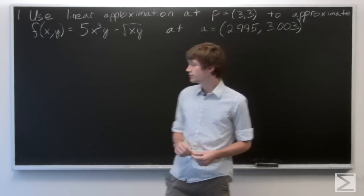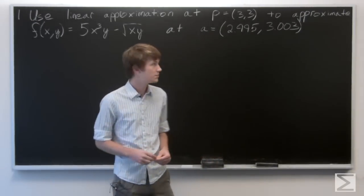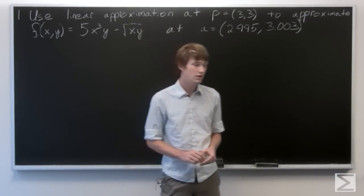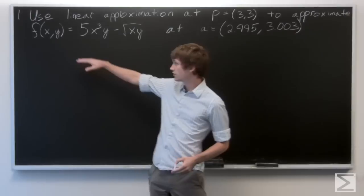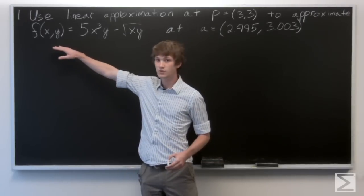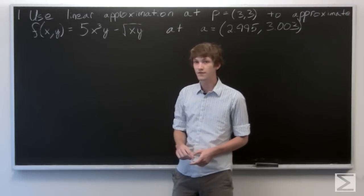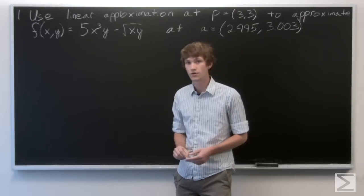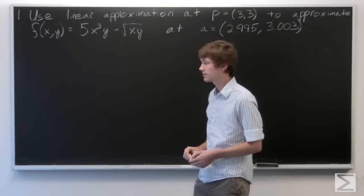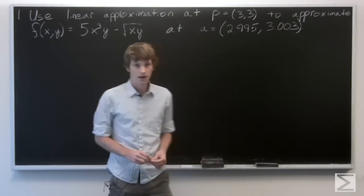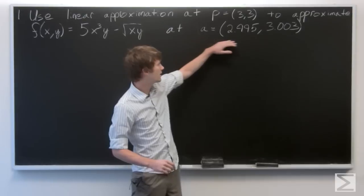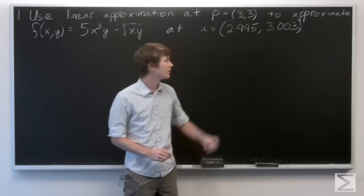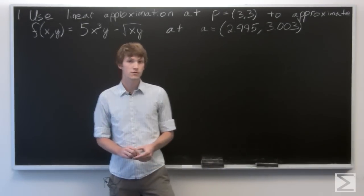In this problem, we're asked to use linear approximation at point p equals (3, 3) to approximate our function f(x, y) equals 5x cubed times y minus the square root of the quantity x times y. And we want to approximate a equals (2.995, 3.003).